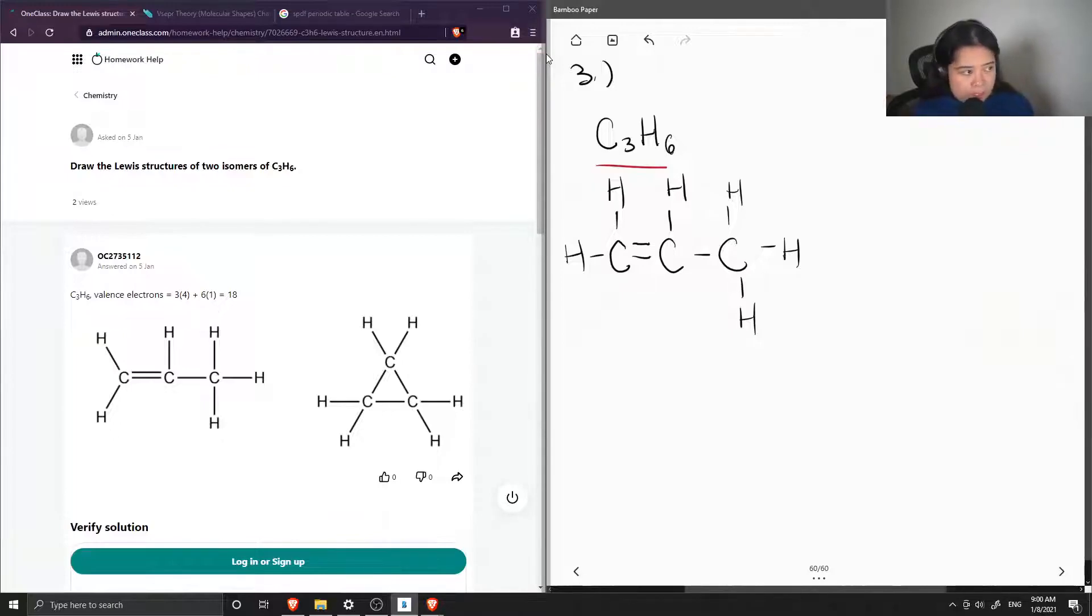The question asks for two Lewis structures of this molecule. Notice if I switched places and put the double bond on carbons two and three,